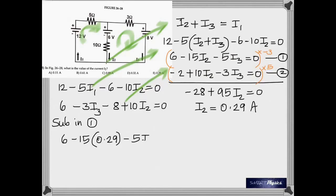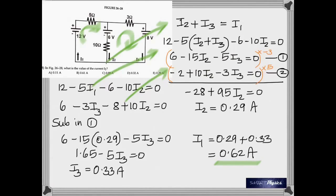Which gives I2 as 0.29 ampere. Take that. Substitute into equation 1. You get I3. And so if you add I2 and I3, you get I1 which is 0.62 ampere.